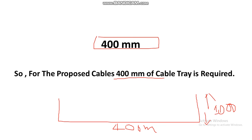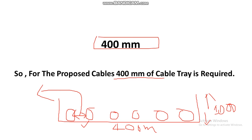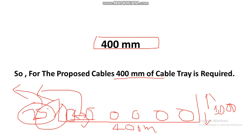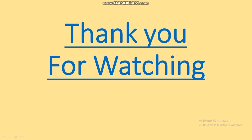So we have calculated the cable tray size for our six cables: three runs of 300mm², two runs of 120mm², and one run of 70mm². The final cable tray size is 400mm width and 100mm depth. Remember to maintain a spacing gap of 25% of the cable diameter between two cables during installation. Thank you for watching — please like, share, comment, and subscribe, and hit the bell icon for upcoming video notifications.